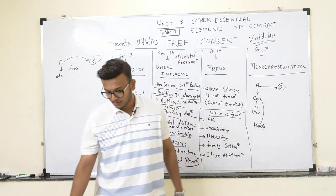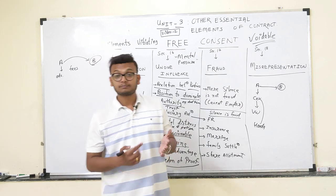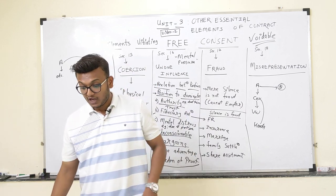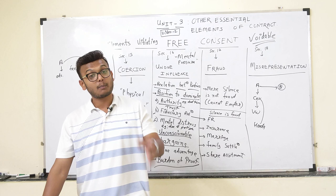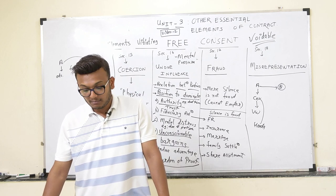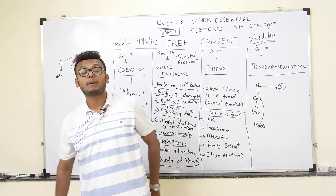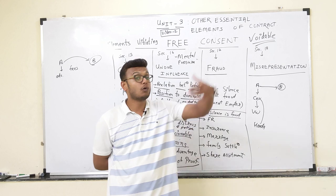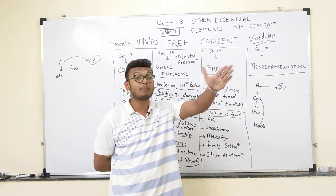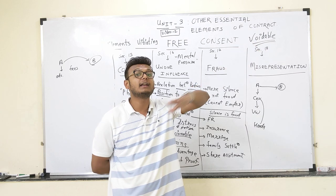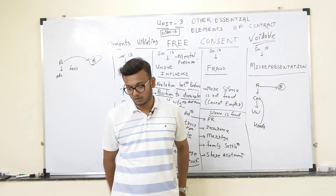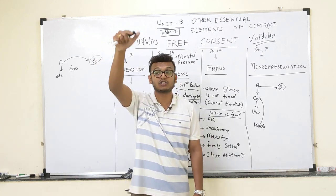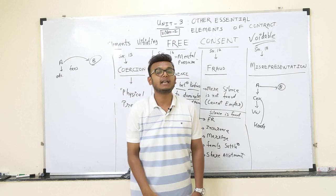Agreements tending to create monopolies — for example, two or three companies coming together to create a shortage and a monopoly market — are void. Marriage brokerage agreements are also void — an agreement to negotiate marriage for reward is opposed to public policy. For instance, an agreement to pay money to a person hired to procure a wife is void in Indian law. Interference with the course of justice — giving money to a witness or a judge — is also void.